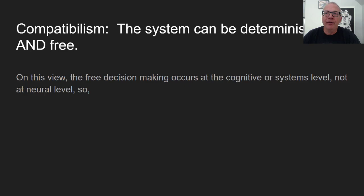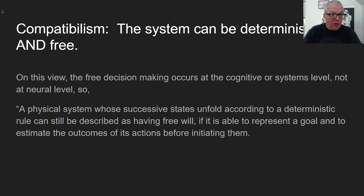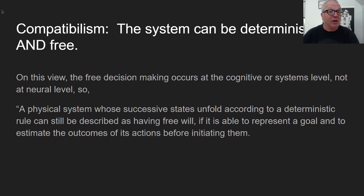Dehaene and Changeux propose a kind of compatibilism: free decision-making occurs at the cognitive or systems level — the high abstract level, not the low neural level. A physical system whose successive states unfold according to a deterministic rule can be described as having free will if it can represent a goal and estimate the outcomes of its actions before initiating them. Contrast deliberating about putting mayo or mustard on a sandwich with reflexively flinching when something is thrown at your face.